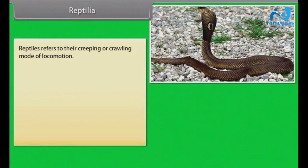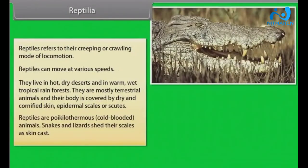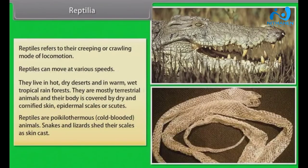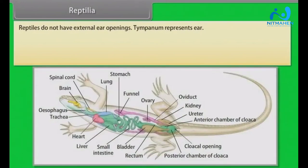Reptiles refer to their creeping or crawling mode of locomotion. They live in hot, dry deserts and in warm, wet tropical rainforests. They are mostly terrestrial animals and their body is covered by dry and cornified skin, epidermal scales or scutes. Reptiles are poikilothermous or cold-blooded animals. Snakes and lizards shed their scales as skin cast. Reptiles do not have external ear openings; tympanum represents the ear.